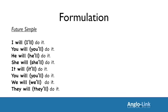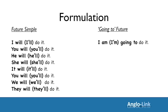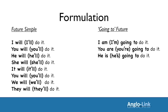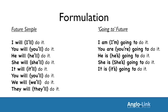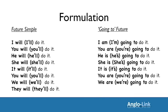You'll notice that will contracts to 'll. Let's look at the formulation of the going to future. For going to future, you simply conjugate the verb to be, then add going to and then the infinitive. Let's have a look: I'm going to do it. You're going to do it. He's going to do it. She's going to do it. It's going to do it. You're going to do it. We're going to do it. And finally, they're going to do it.